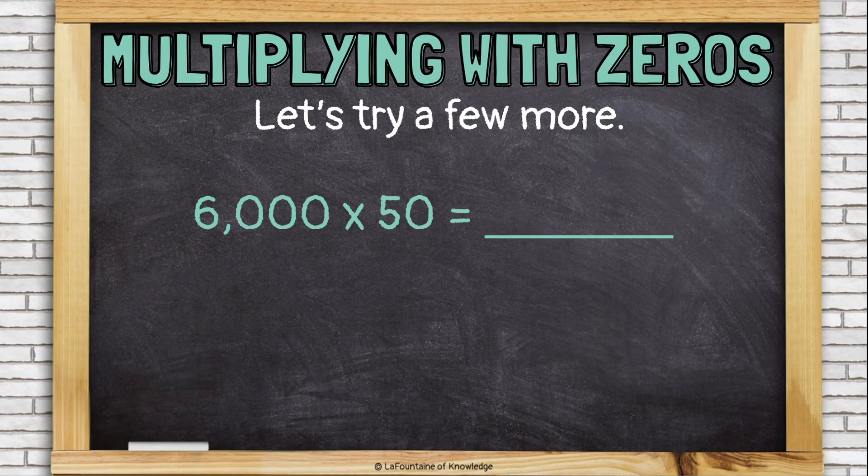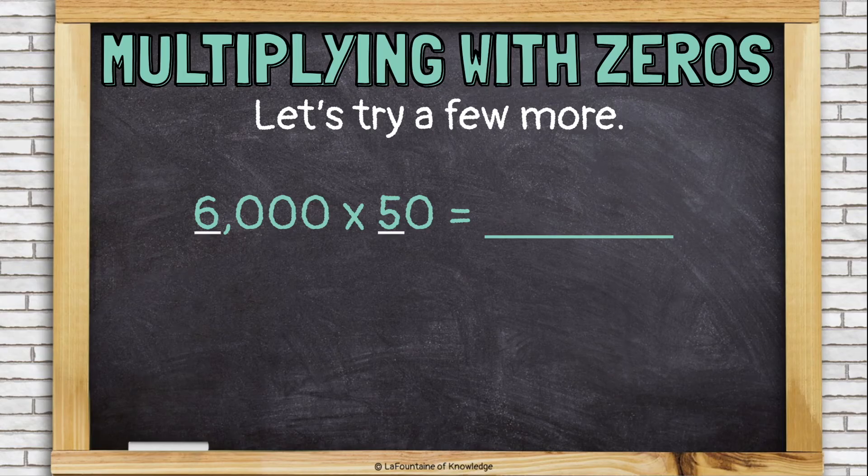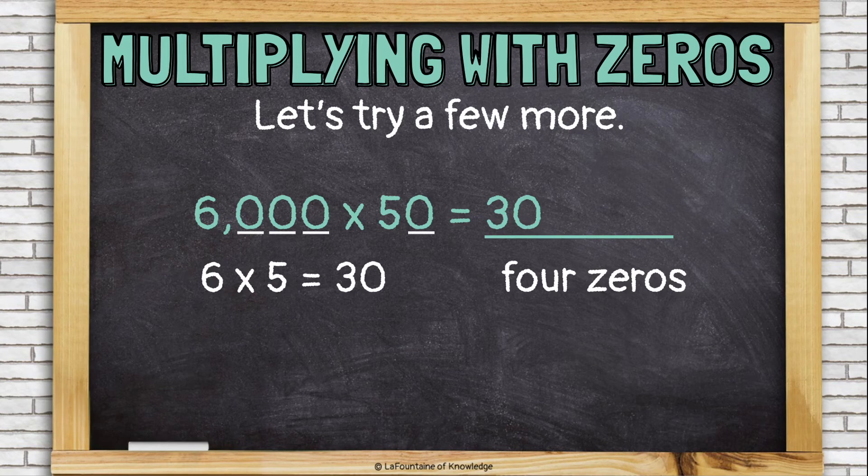6,000 times 50. Ignore the zeros and multiply 6 times 5, which is 30. Now, count the zeros. I have four zeros. So I'm going to add four zeros to the end of my answer.